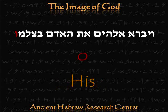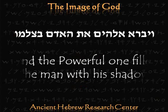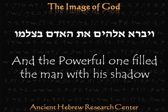Let's put all of this together now and see if we see a different picture for this verse: 'And the powerful one filled the man with his shadow.' Wow, that's a little bit different. It maybe gives us a little bit different understanding, rather than saying that he created man in his own image, because that usually alludes to the idea that we look like God. If the text says that he created us in his image, then he just made carbon copies — that's what it means in the English, or the way we would understand it. That's not what he's saying.